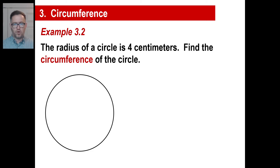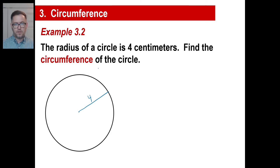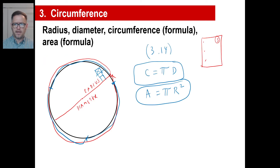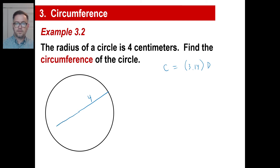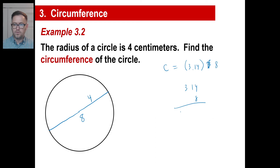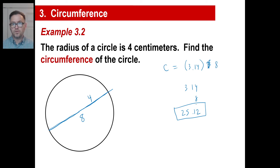Let's do some examples. The radius of a circle is 4 centimeters. Find the circumference of the circle. We go back and say: circumference equals pi times the diameter. Let's write 3.14 for pi, then times the diameter. If the radius is 4, the diameter is 8. So we write 3.14 times 8, and if you do the multiplication, you get 25.12. That is the circumference — if you have a diameter of 8 inches, the distance around the circle is about 25.12 inches.